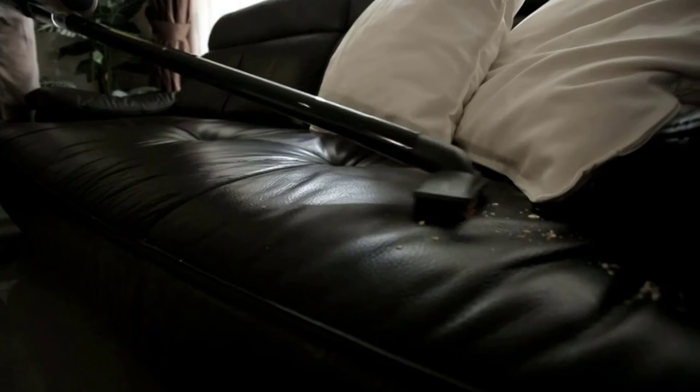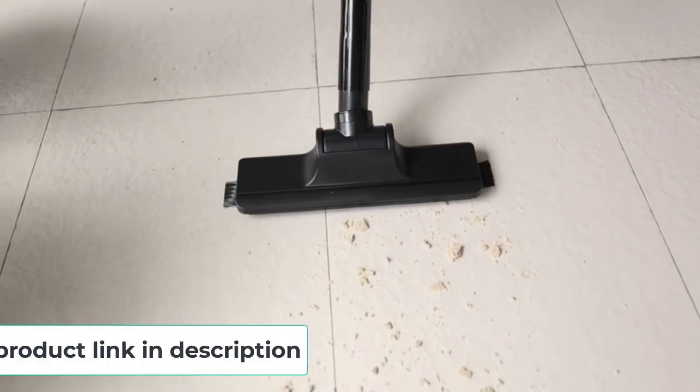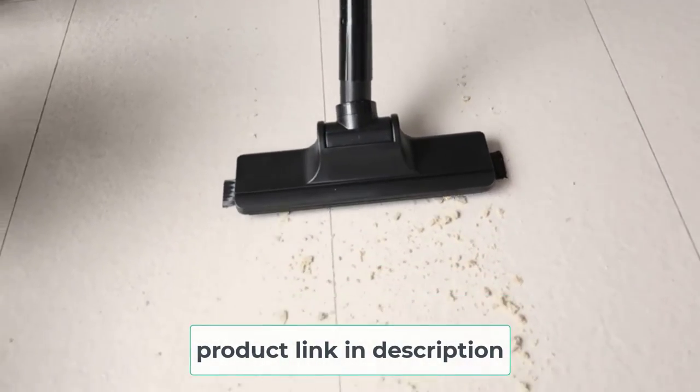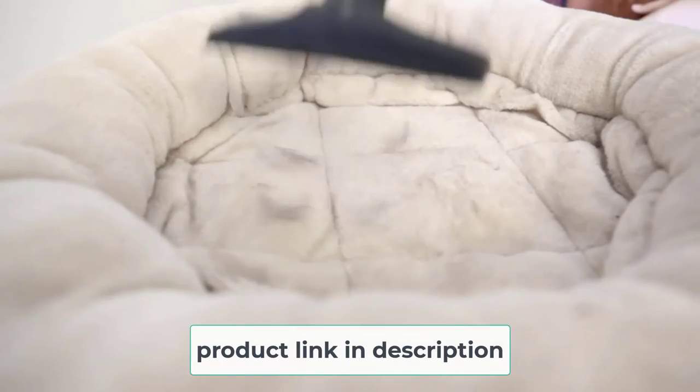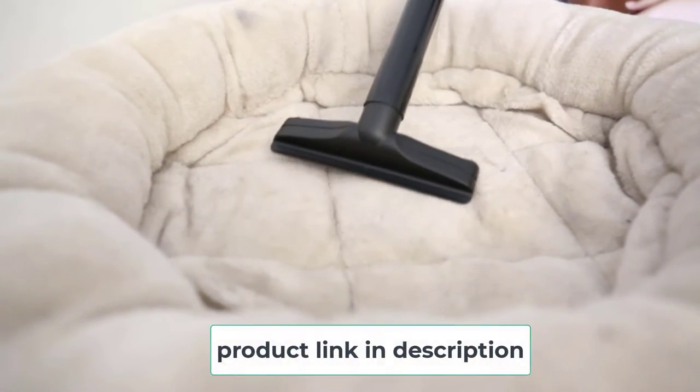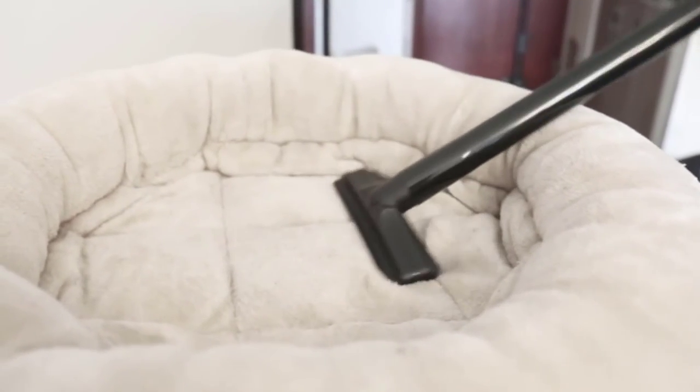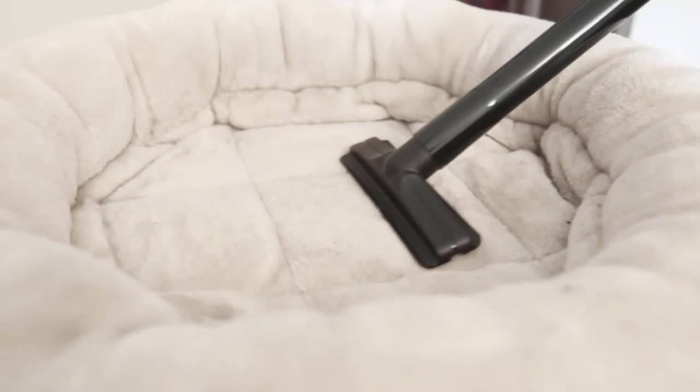It comes with a five-layer filtration system, so it can filter more than 99% of dust and bring you fresh air every day. It includes four kinds of cleaning heads so that you can pick up dirt on various surfaces like your sofa, all corners, or even for the keyboard.